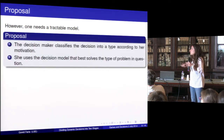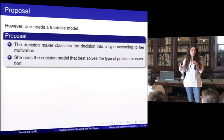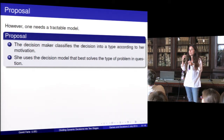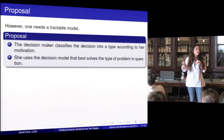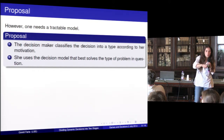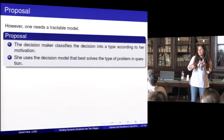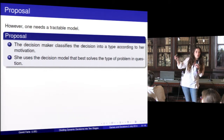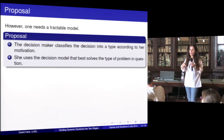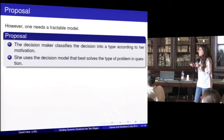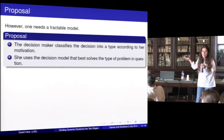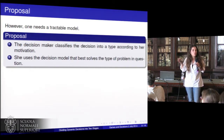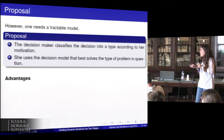So my proposal is to actually divide dynamic decision-making into two stages. In the first stage, we categorize the problem into a type. For example, if it's the type of problem where I think my preferences are going to change, then I say this is the type of problem where I have a preference for flexibility. And then in the second stage, we apply the model that best responds to this kind of preference. So in this case, I would pick up Kreps's model and use it because I know I have a preference for flexibility. What I propose is that we do this more broadly — in every dynamic decision, we first isolate our motivation.